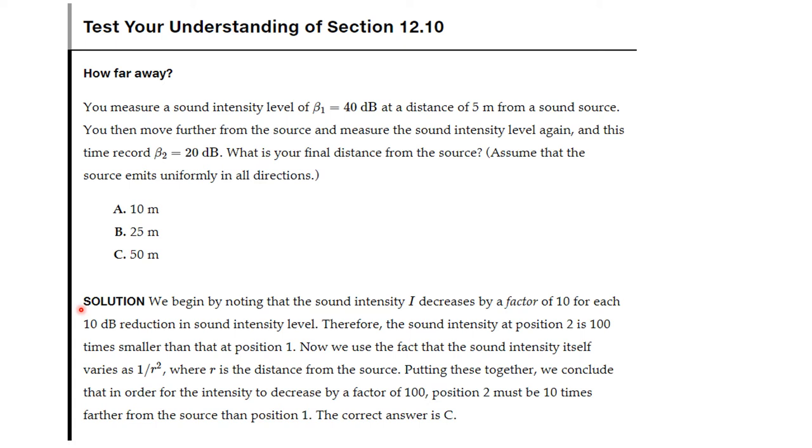Well, you begin by noting that the sound intensity I decreases by a factor of 10 for each 10 dB reduction in the sound intensity level. That's because it is logarithm base 10. Therefore, the sound intensity at position 2 is 100 times smaller than that at position 1. That means 100 is 10 squared. Now we use this fact that the sound intensity itself must vary as 1 over r squared, where r is the distance from the source. Putting these together, we conclude that in order for the intensity to decrease by a factor of 100, position 2 must be 10 times further from the source than position 1. The correct answer then would be C.